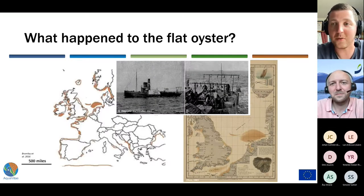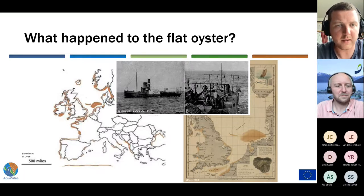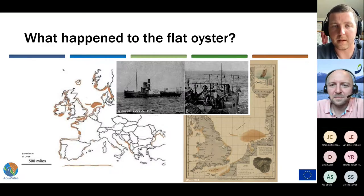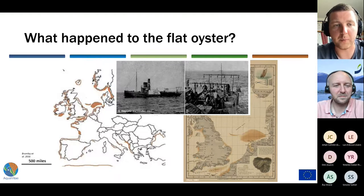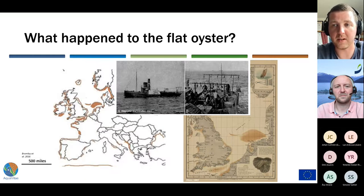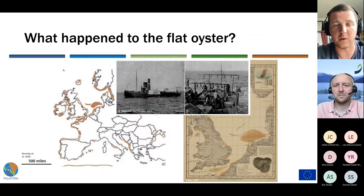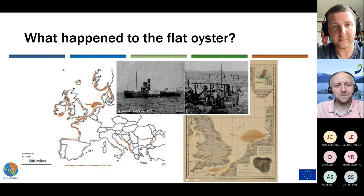To understand how I got to this subject, it's important to understand what happened to the flat oysters. As you can see in this slide, we have two maps of the flat oysters' spread amongst Northern Europe shown in brown. Sadly, most of these oyster reefs have almost completely disappeared over time, for a couple of reasons. Since the 17th century up until far into the 19th century, these oyster beds were harvested by fishing boats like the ones you can see in this picture.